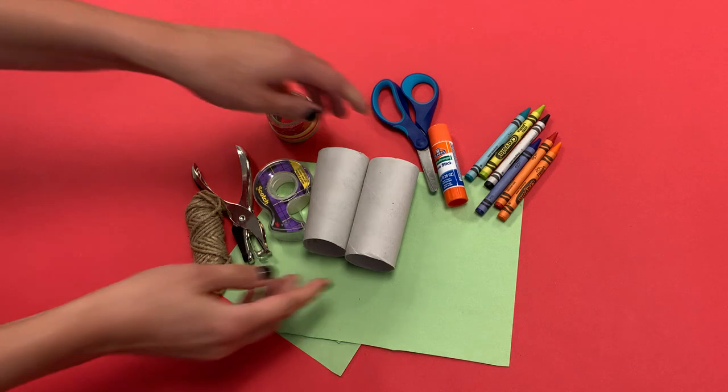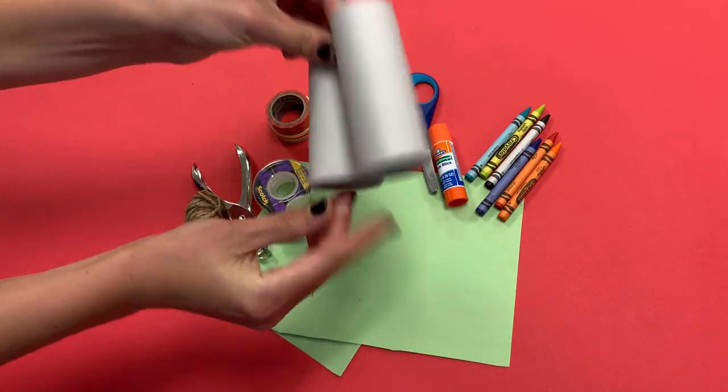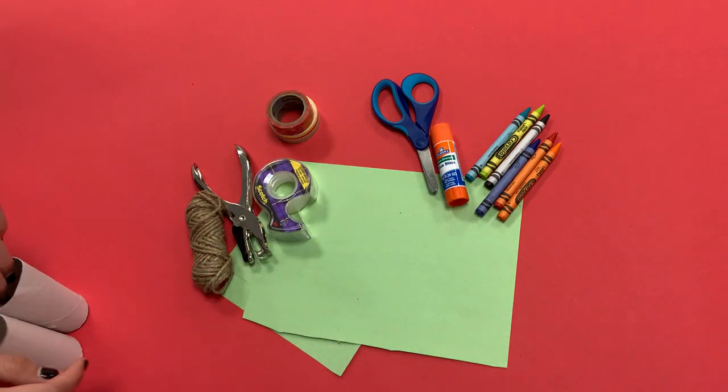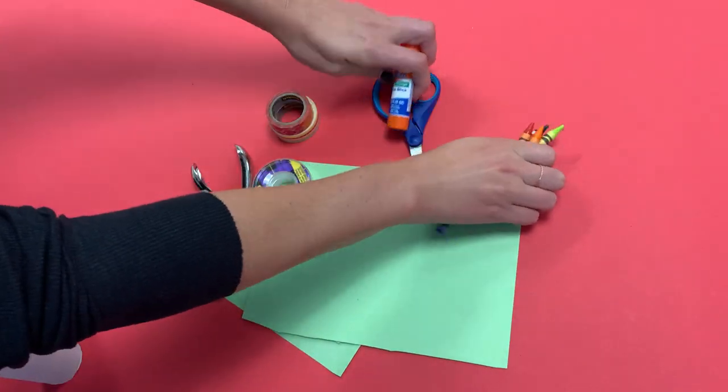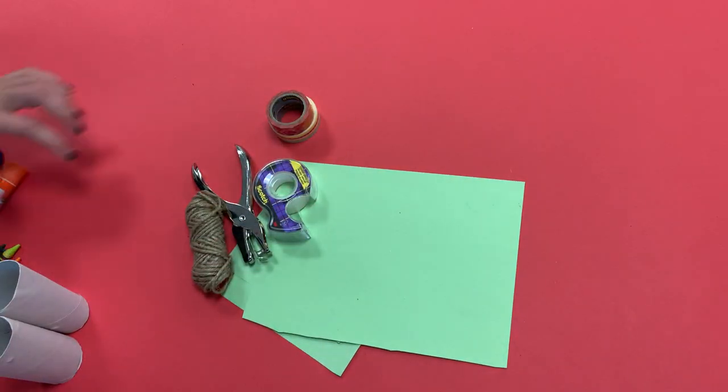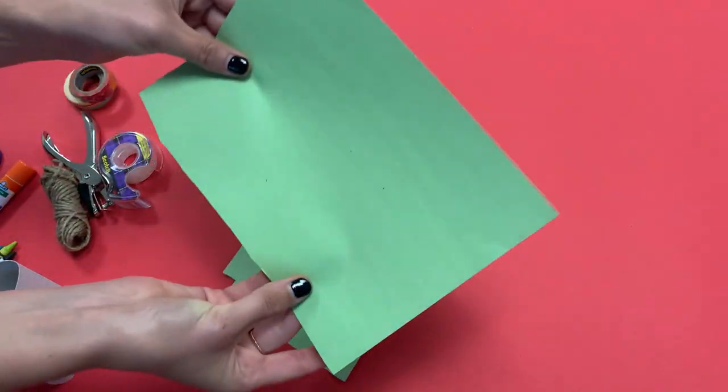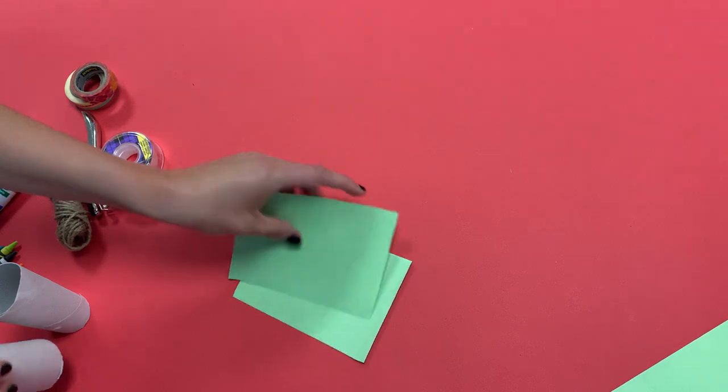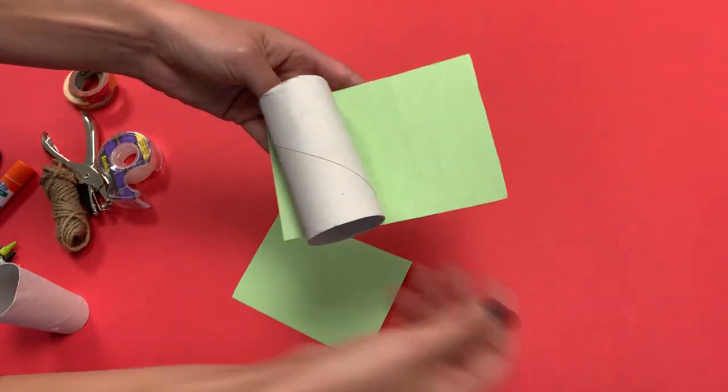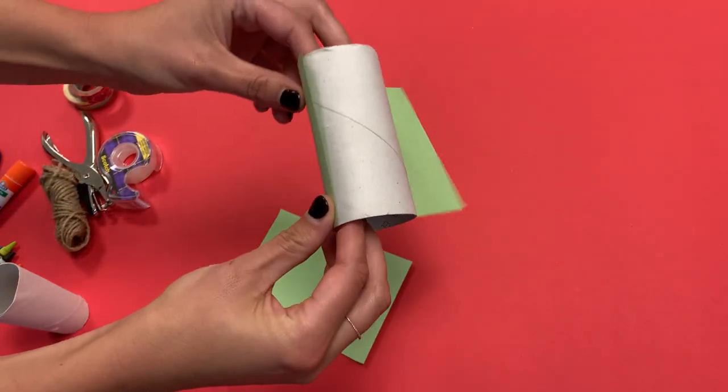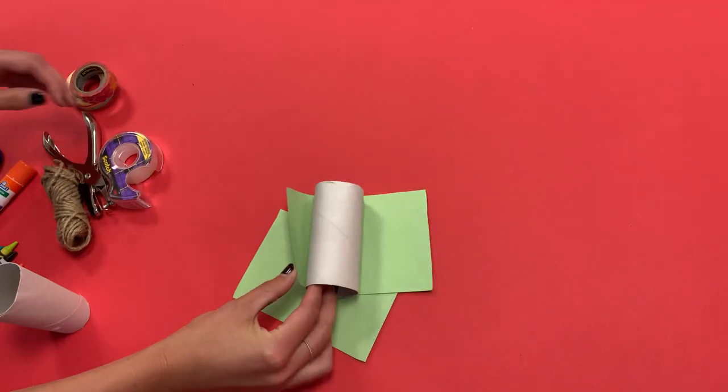So the first thing that we're going to do is take our toilet paper rolls and cover them in construction paper. I've gone ahead and pre-cut my construction paper to the size that I need. I'll show you here. So this is my construction paper and I measured and cut it out so that when I roll up my toilet paper tube it's the exact size.